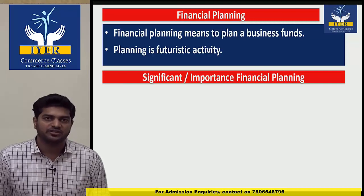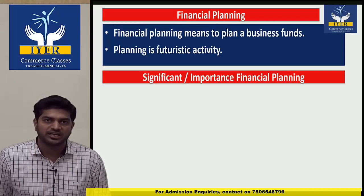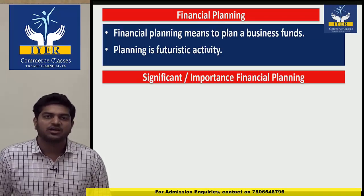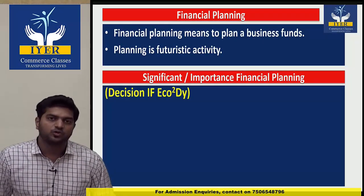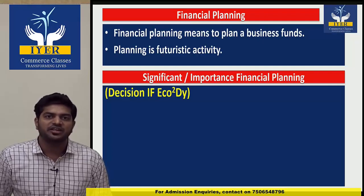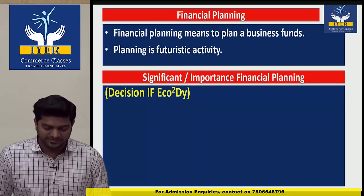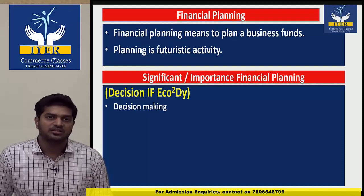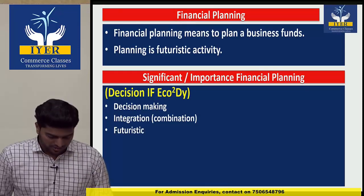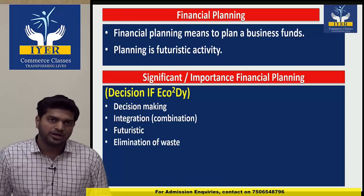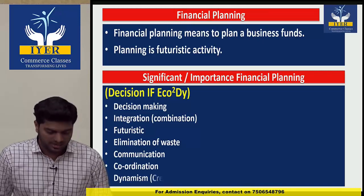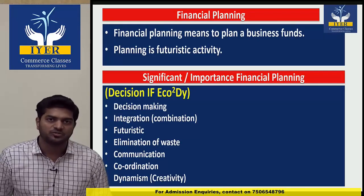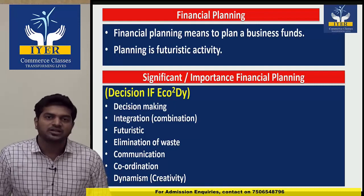A very important exam question is the significance and importance of financial planning. This was asked last year. To remember the points, we use the code: 'decision if eco square die.' Points are: decision making, integration, futuristic, elimination of wastages, communication, coordination, and dynamism.